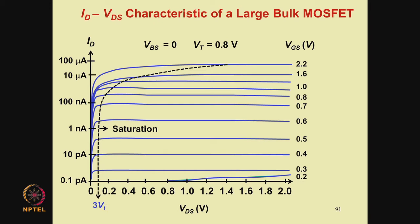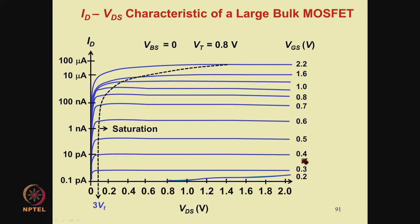Let us begin with the ID-VDS curves with ID plotted on a log scale. On the semi-log plot, the region below threshold gets amplified. The threshold voltage is 0.8 volts, so this is the curve corresponding to threshold. VGS equal to 0.8 volts and this region is the subthreshold region.